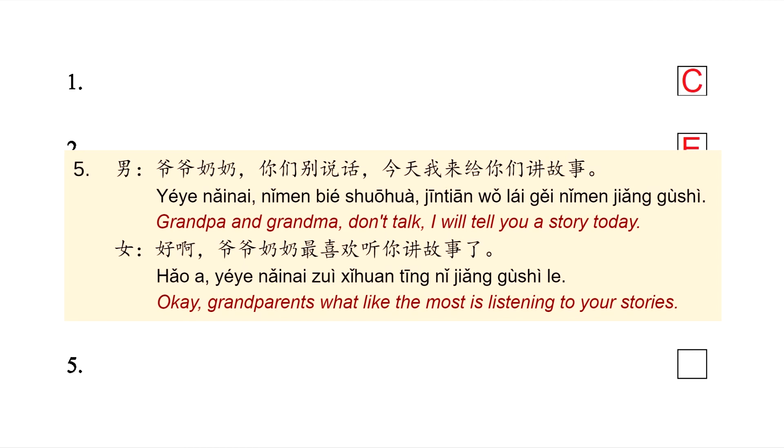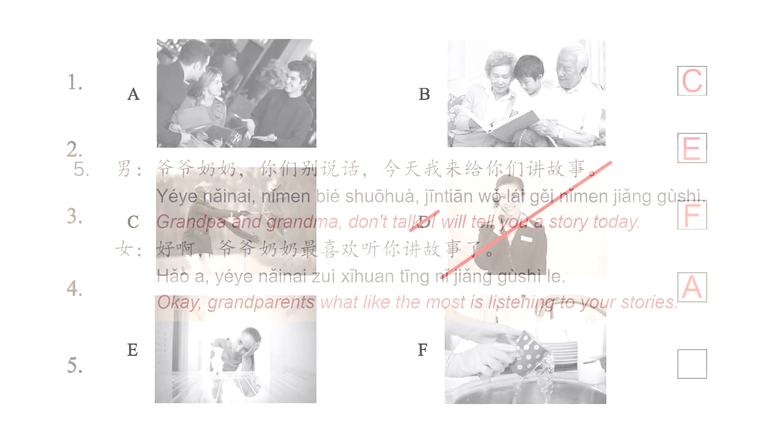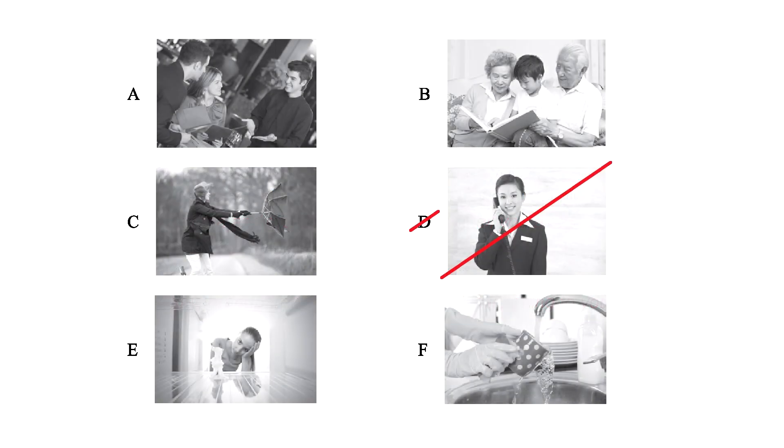In this dialogue, we hear 爷爷奶奶，你们别说话，今天，我来给你们讲故事. Grandpa, Grandma, don't talk, I will tell you a story today. The woman answers 好啊，爷爷奶奶最喜欢听你讲故事了. OK, what grandpa and grandma like the most is listening to your stories. In picture letter B, we have grandparents with their grandson reading a book, so this is the correct picture.